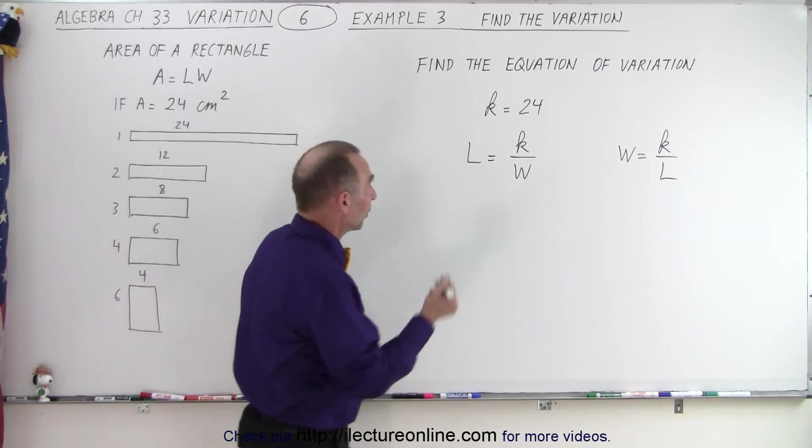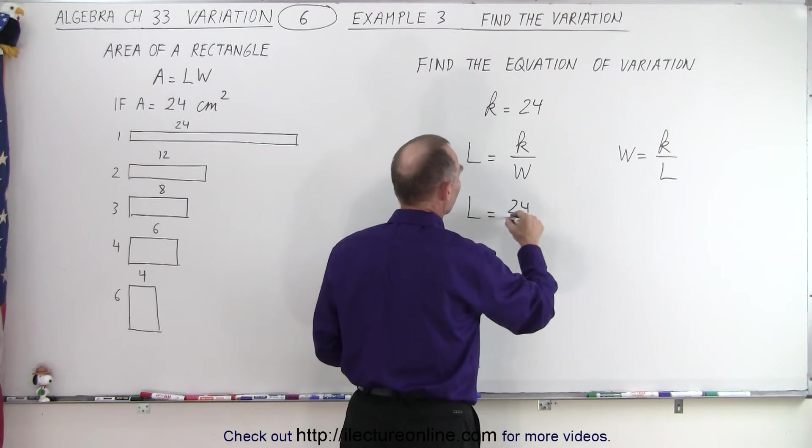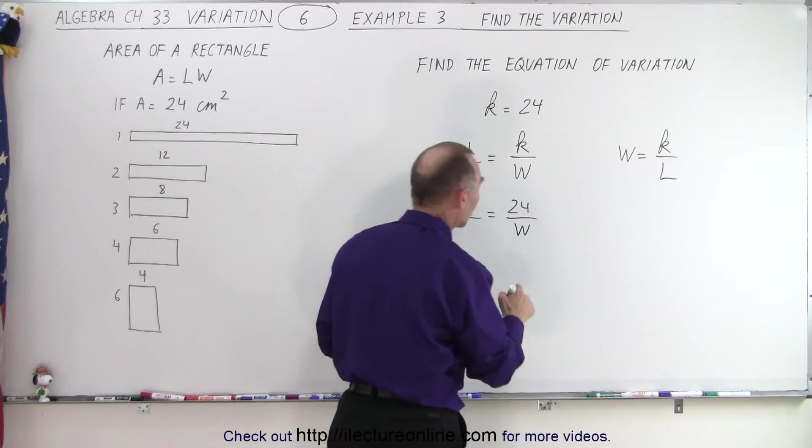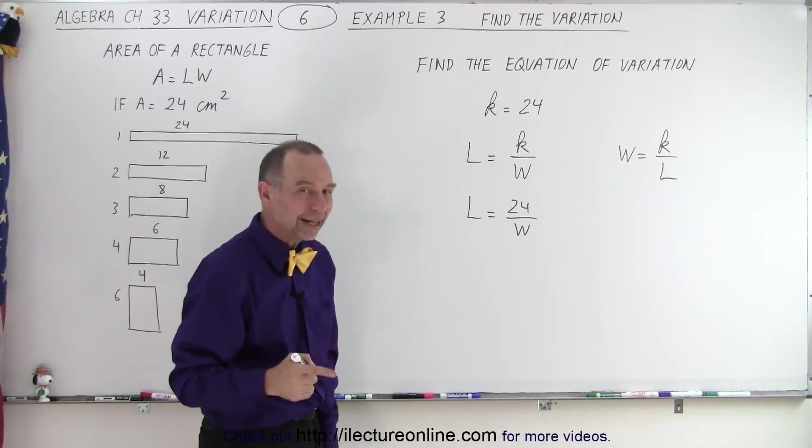We know what the value for k is, so we can plug that in there. So we have L is equal to 24 divided by W. And now we plug in any value for W and we'll get the appropriate value for L.